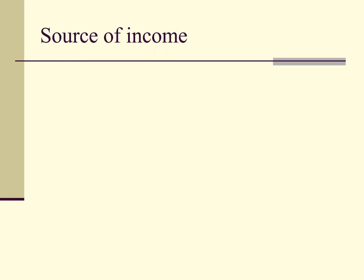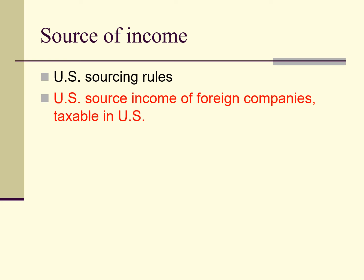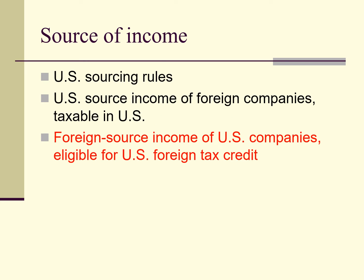Once income is classified, the rules specific to that type of income are used to determine the source of the income. In general, we will be studying only the U.S. sourcing rules. These rules will tell us, for U.S. tax purposes, what income of foreign corporations is sourced in the United States and thus potentially subject to U.S. tax. These rules will also tell us what income is foreign source income under U.S. tax law and is therefore potentially eligible for a U.S. foreign tax credit when the company is paying tax in other countries.